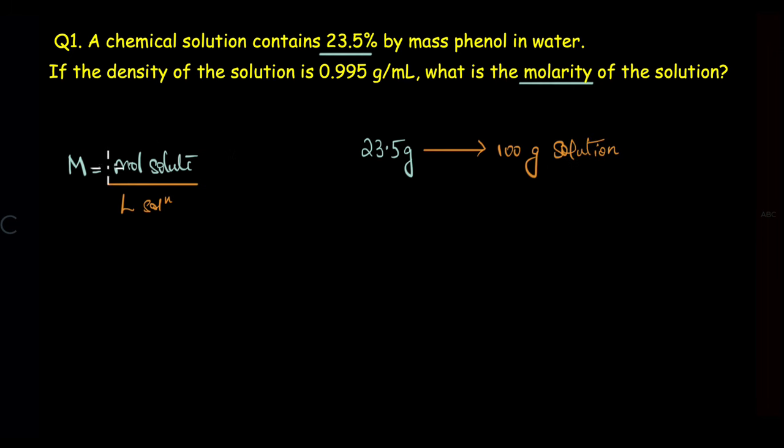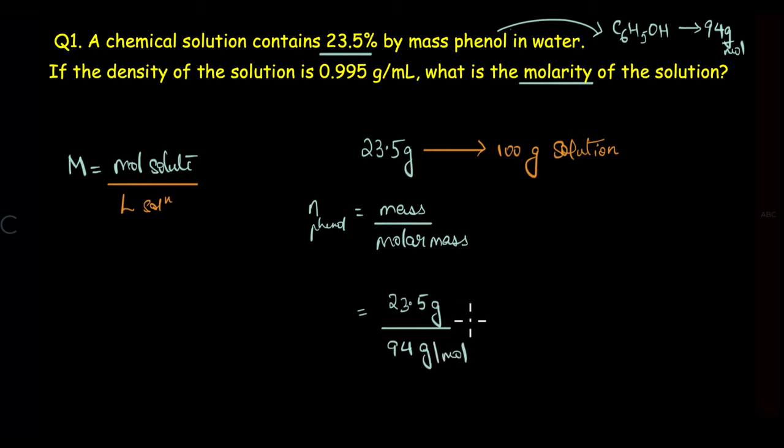Now how do we arrive at the number of moles of solute from this mass? Very straightforward. We know that number of moles of phenol is given mass of phenol divided by the molar mass of phenol. Now phenol is C6H5OH. From this particular formula you can easily arrive at the molar mass which is 94 g/mol. So we have 23.5 grams divided by 94 g/mol, which gives us 0.25 mole.